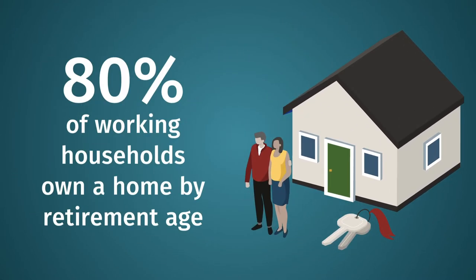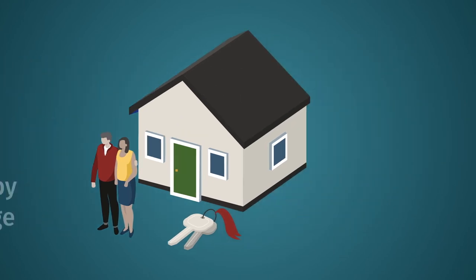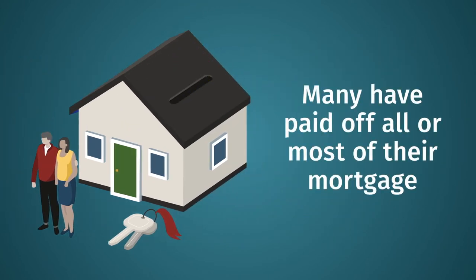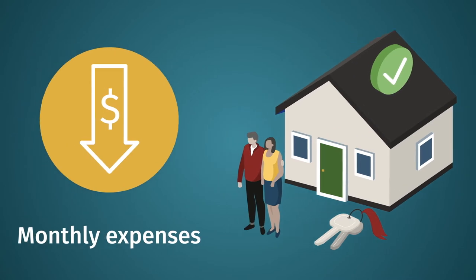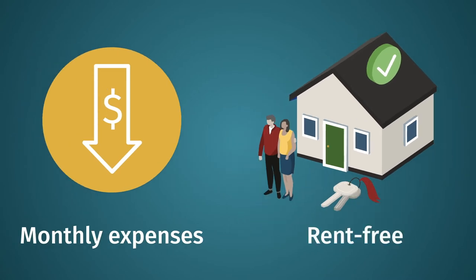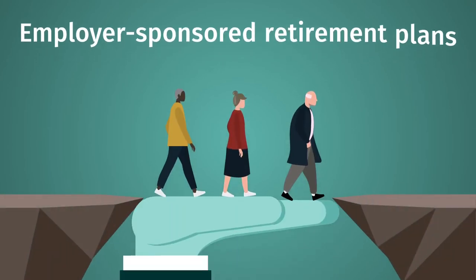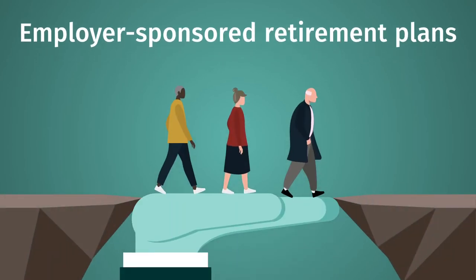Home ownership forms the second level. About 80 percent of households own a home by retirement age, and many have paid off all or most of their mortgage. Home ownership reduces monthly expenses because you can live in your home rent-free.